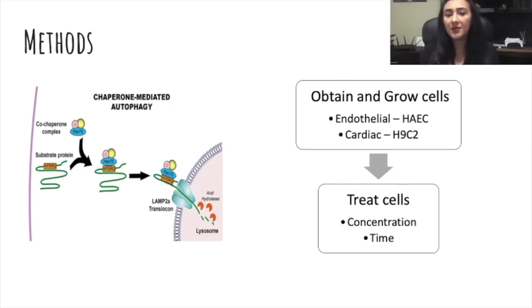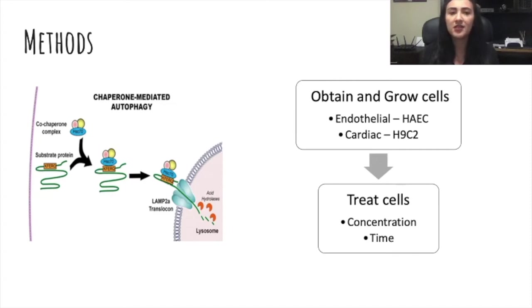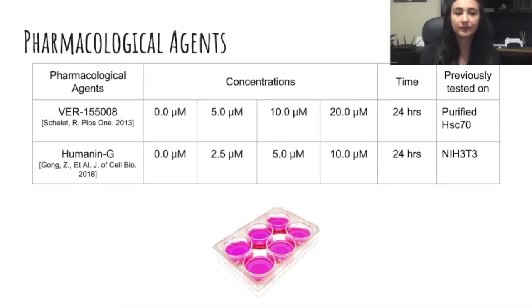So what did we do? We obtained and grew cells. We first grew endothelial cells, which are cells that surround your blood vessels, and then we have cardiac cells, which are your heart muscle cells. Then we treated the cells at different concentrations and intended to treat them at different time points, but due to the craziness of this year we only had time to do that for 24 hours. We also only had time to do one activator and one inhibitor.